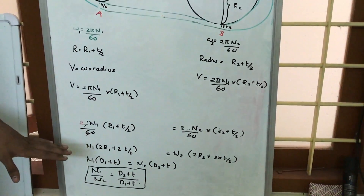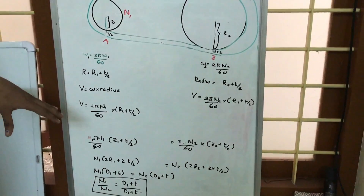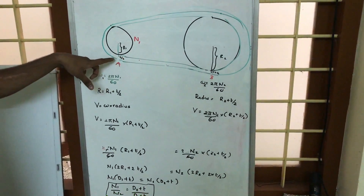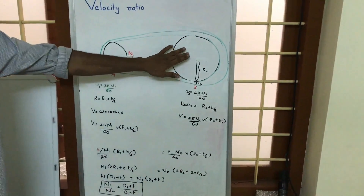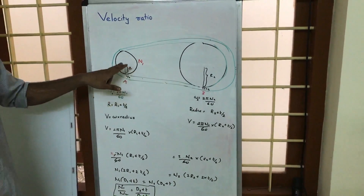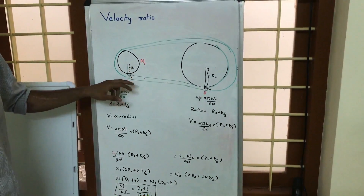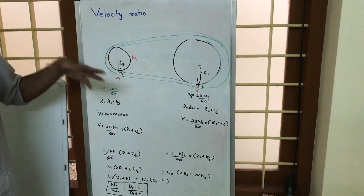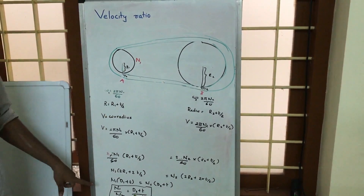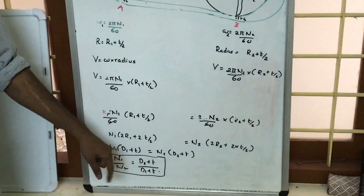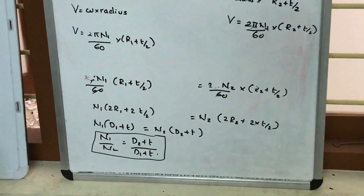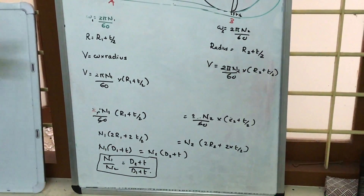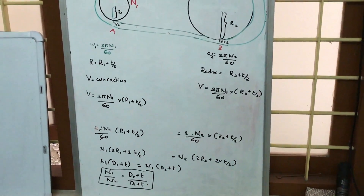The assumptions made in this derivation are: first, there is no slip between the pulley and belt; second, the belt is inelastic. Based on these assumptions, the velocity ratio is n1/n2 = (d2 + t)/(d1 + t), where d1 and d2 are the diameters of the respective pulleys and t is the belt thickness. Thank you.